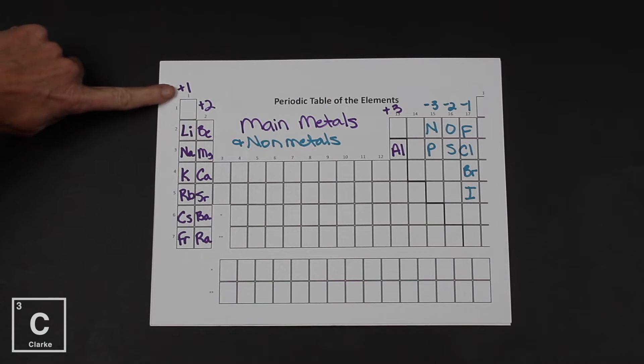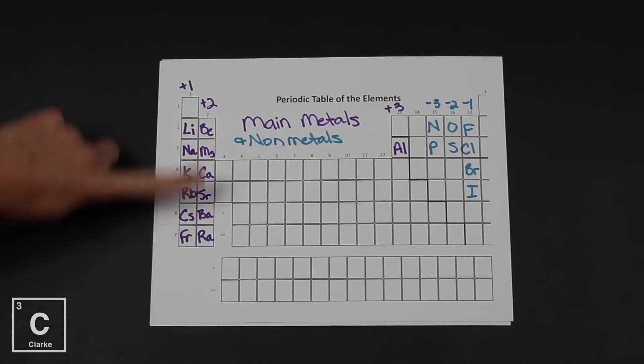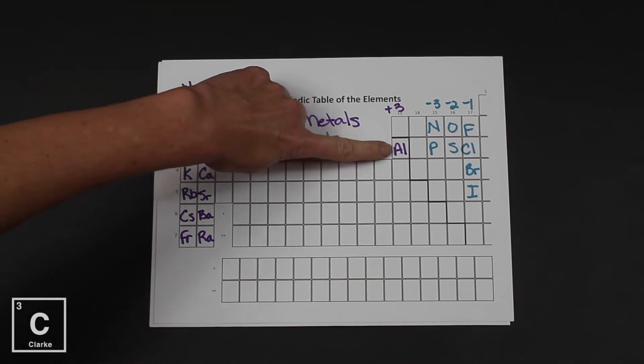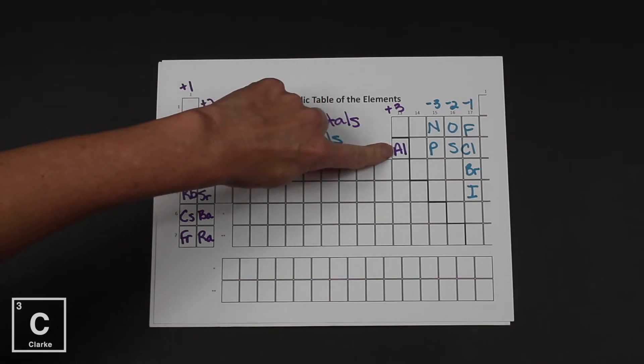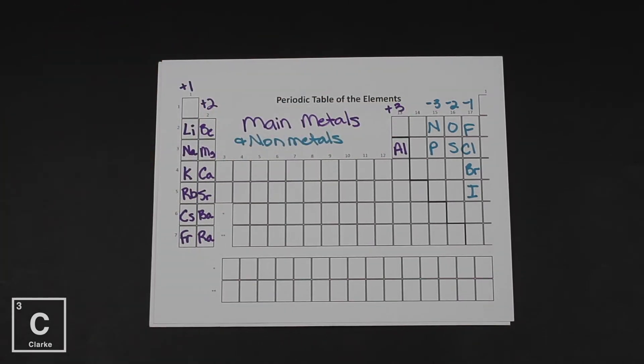Group one is always a plus one when it forms an ion. Group two, always a plus two when it forms an ion. And then from group three, aluminum is really the only metal that we consider a main group metal. These are the metals that we're going to be talking about when we consider naming ionic compounds that come from main group metals.